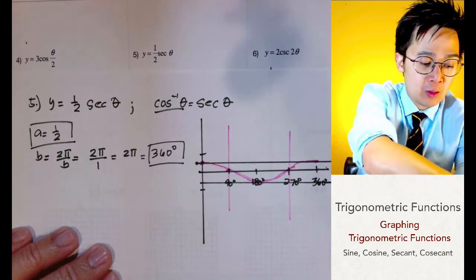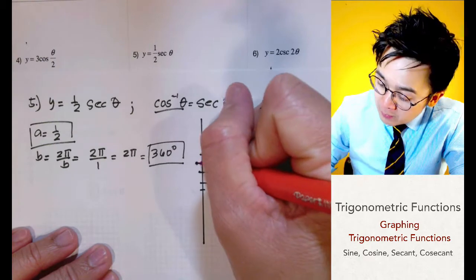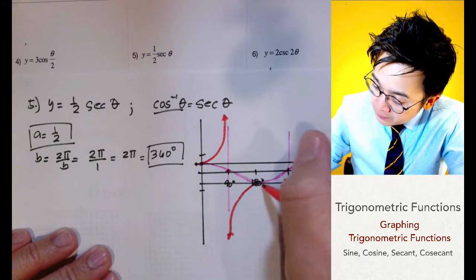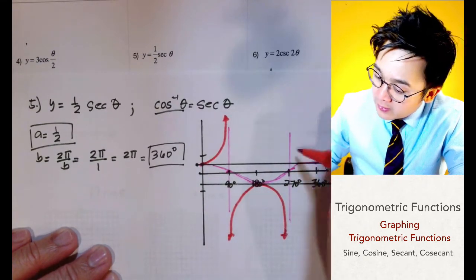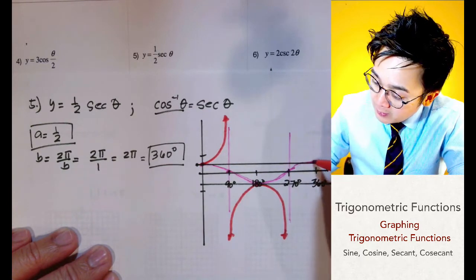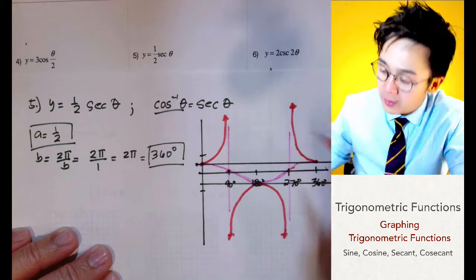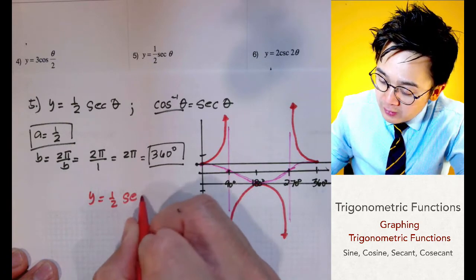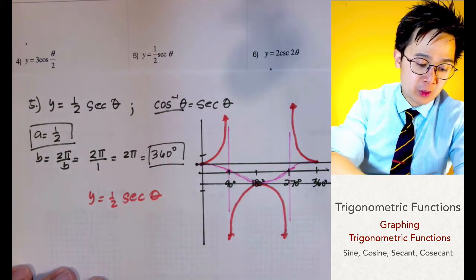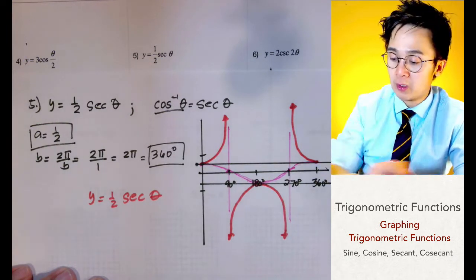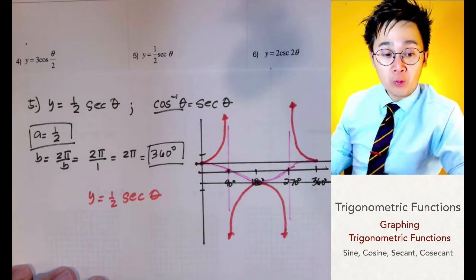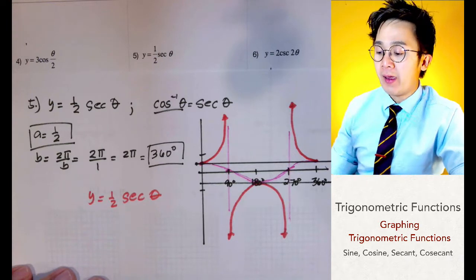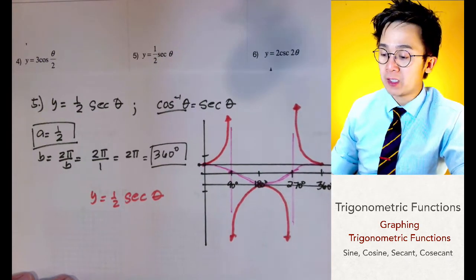The peaks of the cosine function become the minimum and maximum points of the secant graph. This gives us the graph of y equals one-half secant theta. When graphing secant and cosecant, always draw the inverse function first — it serves as a guide to locate the asymptotes and the minimum and maximum points.